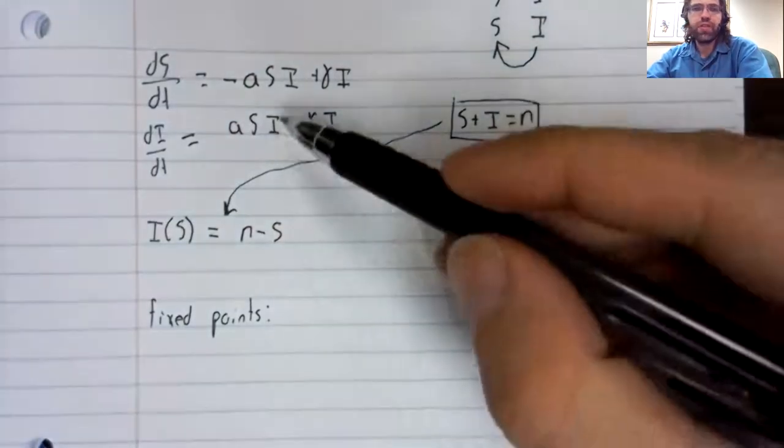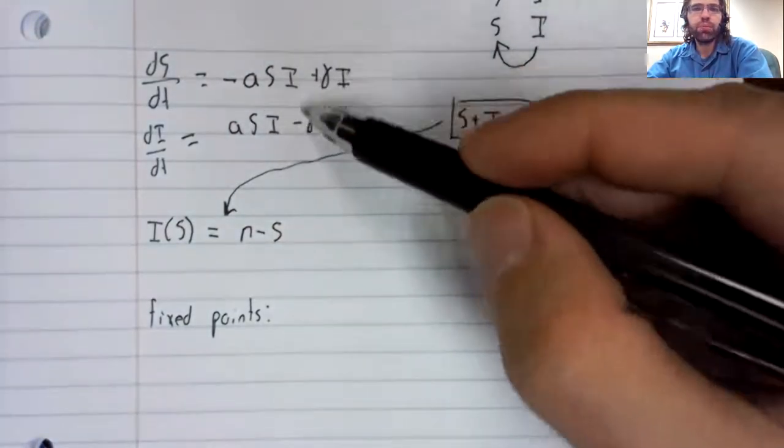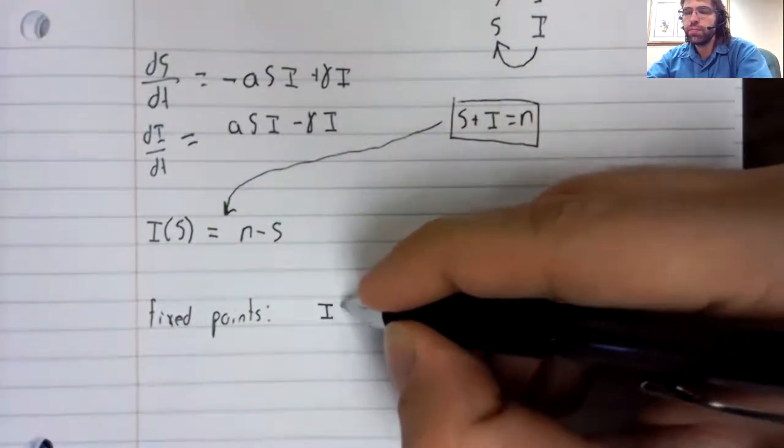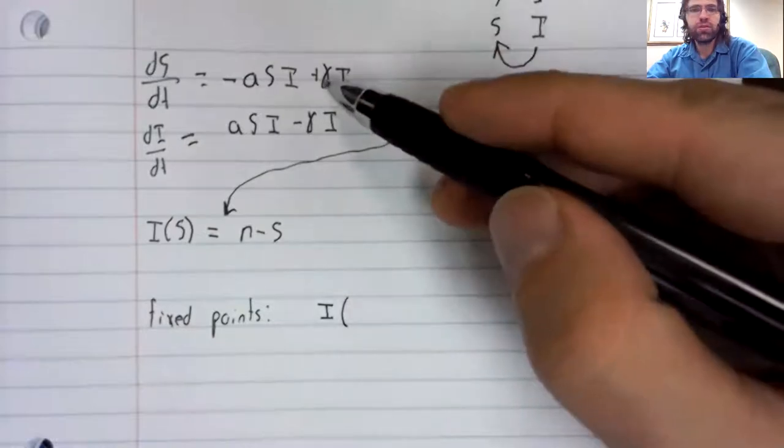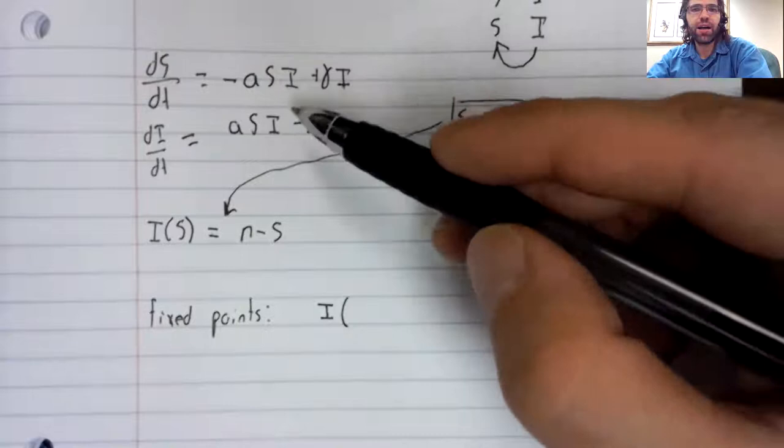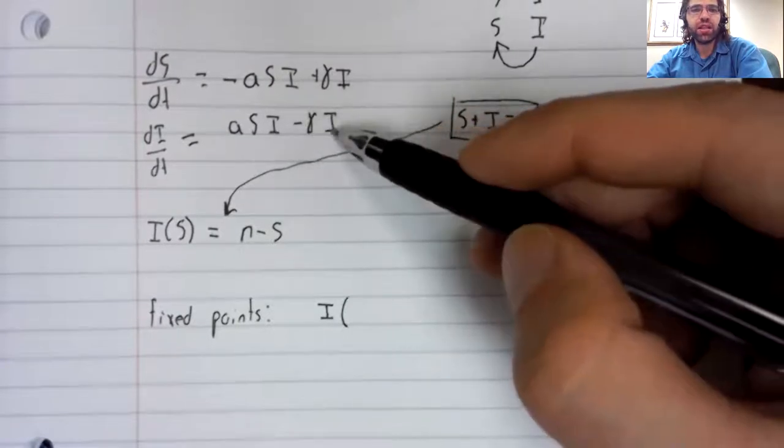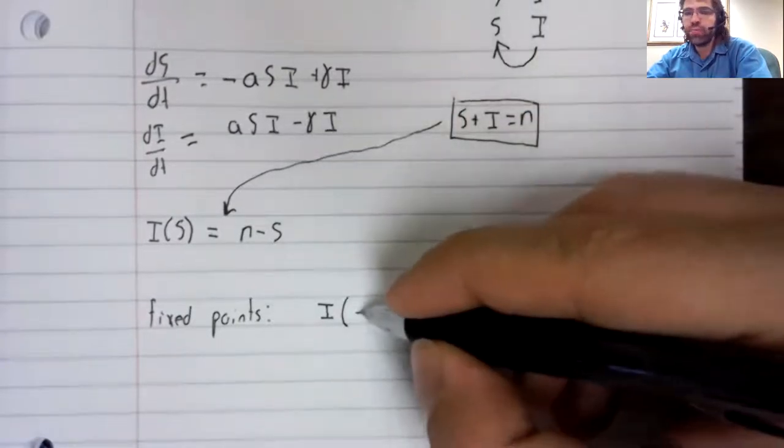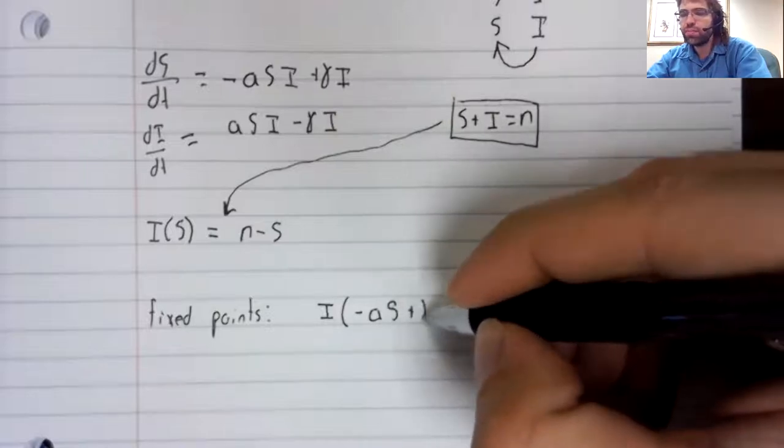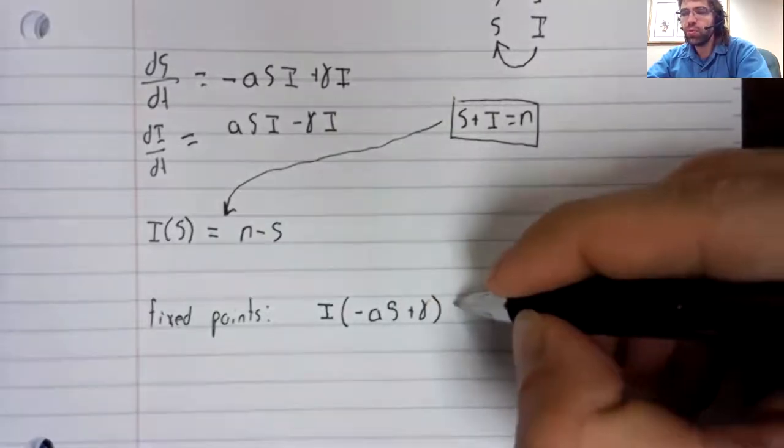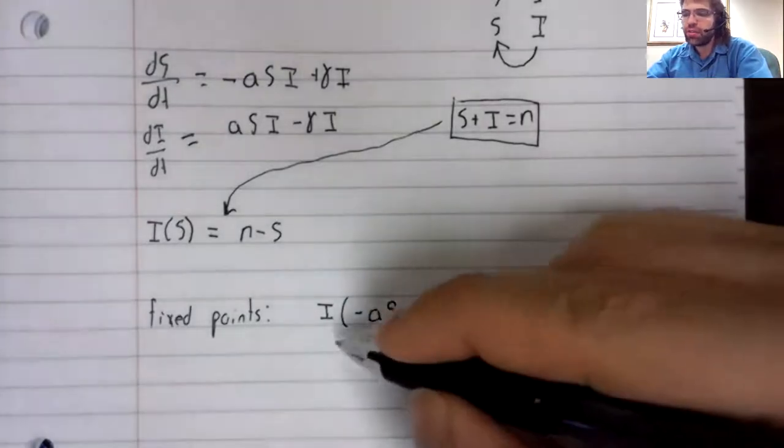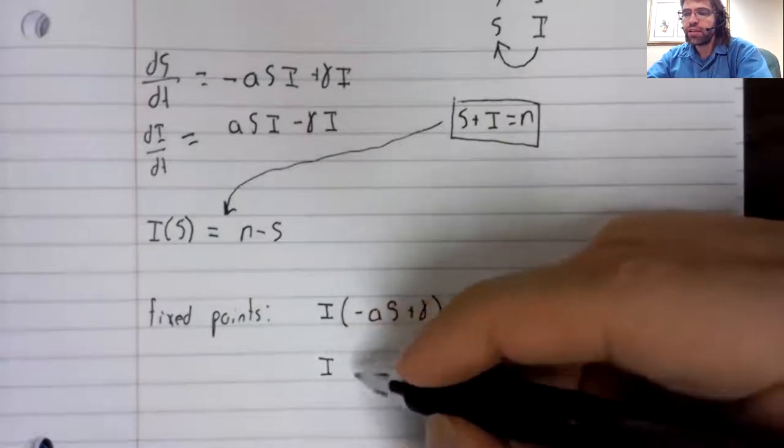A fixed point occurs when both these derivatives are zero. In this first expression, we see an I and an I. Again, in the second expression, I'm going to set these equal to zero. And at the same time that I do that...